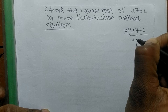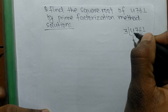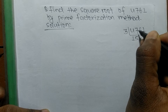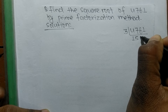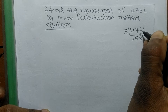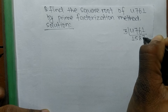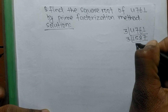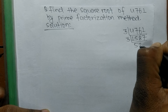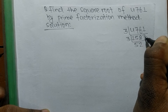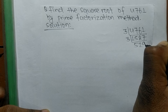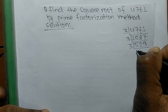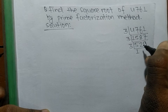We divide 4761 by 3. 3 times 5 is 15, remaining 2; 3 times 8 is 24, remaining 2; 3 times 7 is 21, divisible by 3 again; 3 times 5 is 15; 3 times 9 is 27; again divisible by 3.